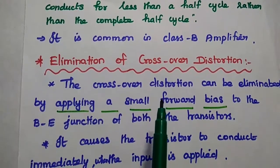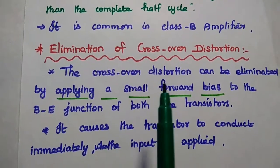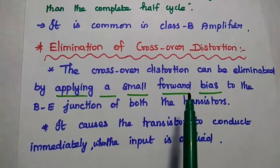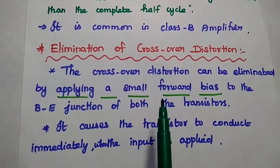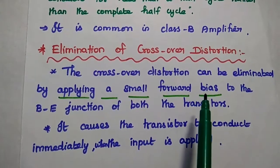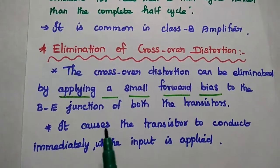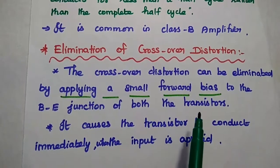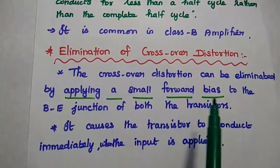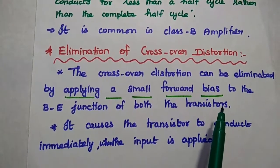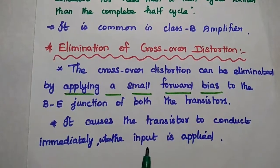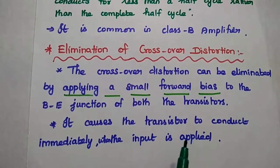Next, we are going to eliminate this crossover distortion. This can be eliminated by applying a small forward bias which is equal to the cut-in voltage to the base-emitter junction of both transistors. If we apply a small forward bias to the base-emitter junction, then we can immediately start the transistor and there is no crossover distortion.